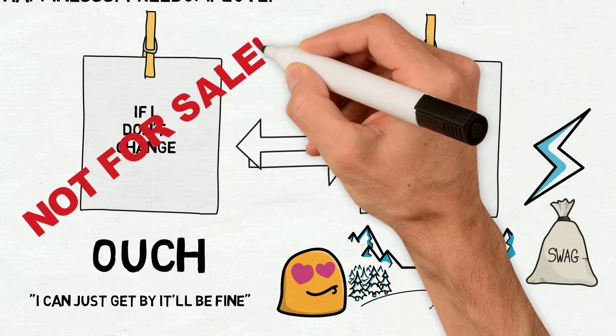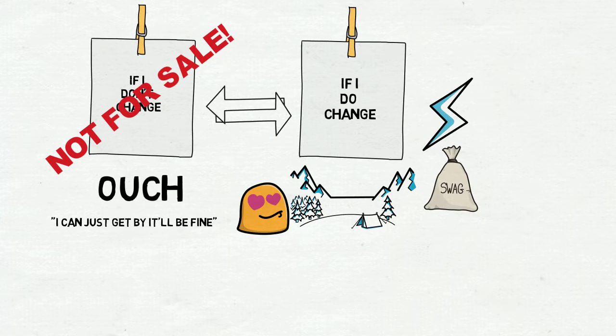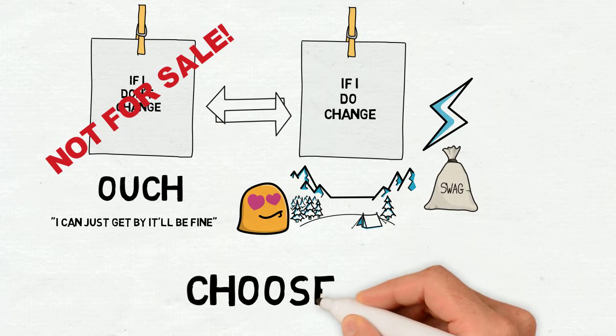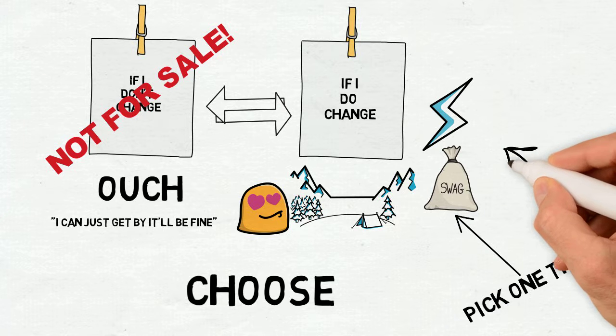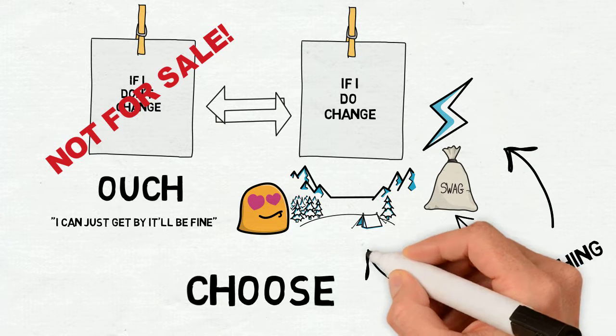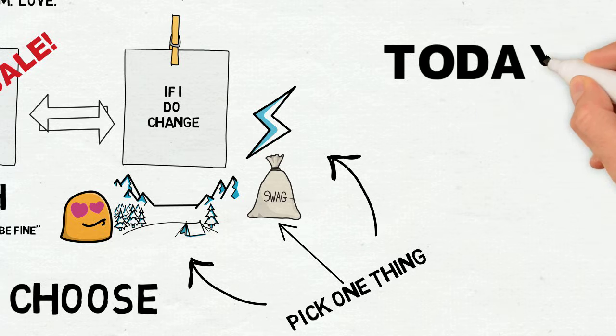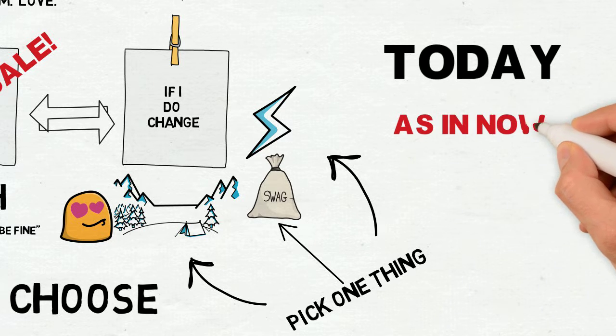You know that's not true. Stop lying to yourself. I thought we talked about this already. Come on now. Look at the list. Pick one. If you pick the life of your dreams, congratulations. Pat yourself on the back. Pick one thing that you're going to start today that will move you towards something on that list. I don't care how small it is. Pick it. Do it.